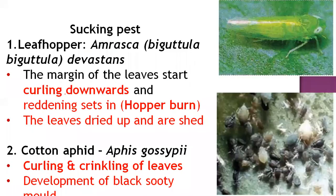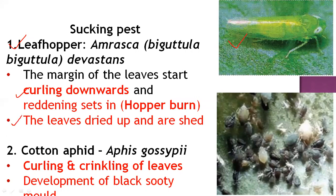Among sucking pests, the leafhopper — called jassid (Amrasca bigutulla bigutulla) — sucks plant sap, causing downward curling of leaves. Continuous infestation causes reddening of plants, and finally the symptoms are called 'hopper burn.' When severe, whole plant leaves dry up and shedding starts.